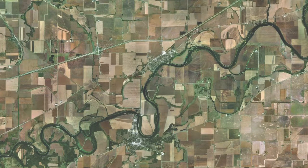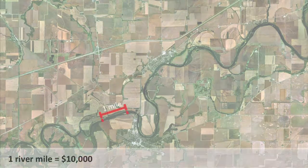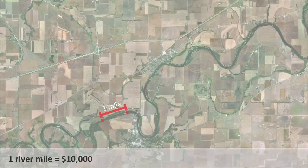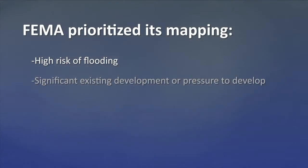FEMA had originally hoped to produce a detailed flood insurance study for all flood-prone communities. Unfortunately, the cost of performing detailed studies can run in excess of $10,000 per river mile. Due to budgetary constraints, FEMA generally reserves detailed studies for communities where there is a high risk of flooding and significant existing development or potential for future development in the floodplain.